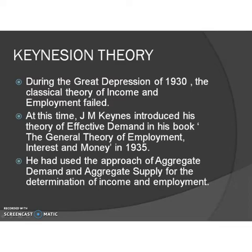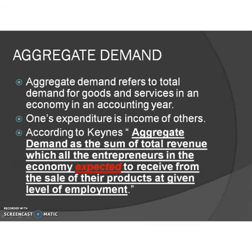Now we are going to study Keynesian theory of income and employment in detail. He used aggregate demand and aggregate supply. So first, aggregate demand refers to the total demand for goods and services in an economy in an accounting year.